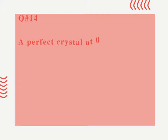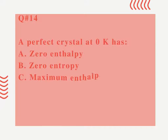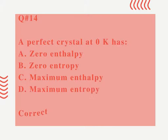Question number 14. A perfect crystal at zero Kelvin has: A. Zero enthalpy. B. Zero entropy. C. Maximum entropy. D. Maximum entropy. Correct option is B.